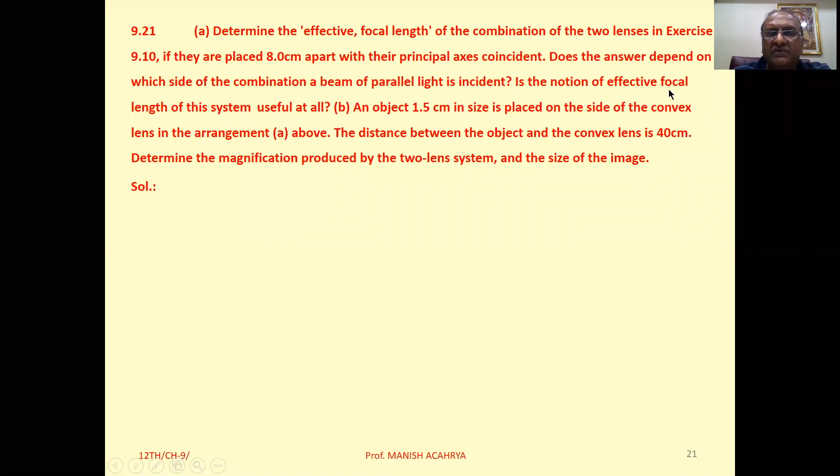Is the notion of effective focal length of the system useful at all? Part B: An object 1.5 cm in size is placed on the side of the convex lens in arrangement A above. The distance between the object and the convex lens is 40 cm. Determine the magnification produced by the two lens system and the size of the image.